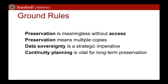We got out of PASIG a definition that digital preservation is strategy and actions to preserve access to content. For Stanford, our ground rules include the notion that preservation is meaningless without access — we cannot just place content on tape and forget about it. Preservation also means multiple copies to protect against loss, and data sovereignty is a strategic imperative. We cannot hand all of our data over to third parties; I have to be able to go to a data center and touch my data, just like I could go to the library and touch a book.